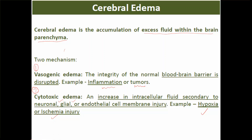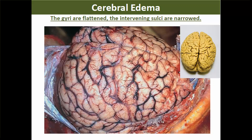Normally the cerebral hemisphere shows sulci which are quite deep, and between two sulci we have the gyrus which is raised. In the case of cerebral edema, you can notice that the sulci are flat, the gyri are flattened, and the intervening sulci are narrow. Blood vessels lie within the sulci between the gyri, but here the gyri are flattened.